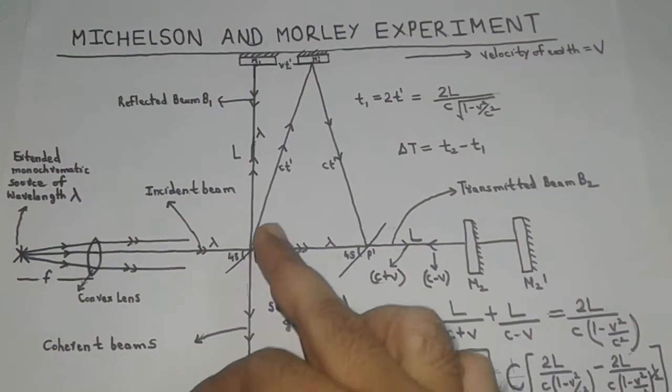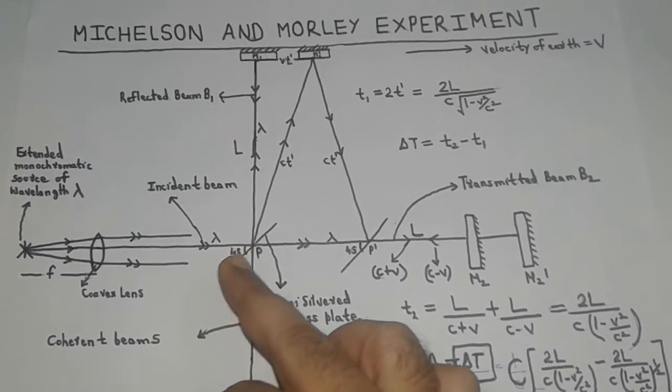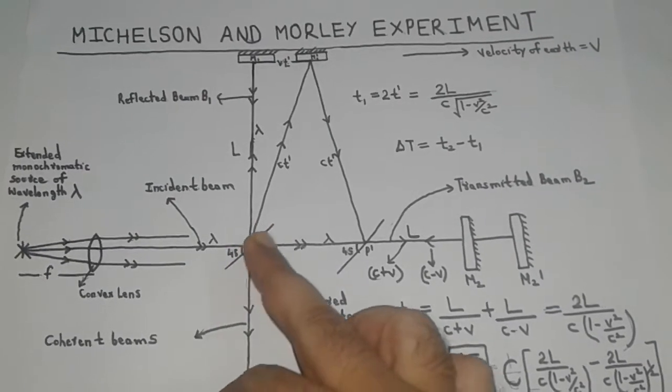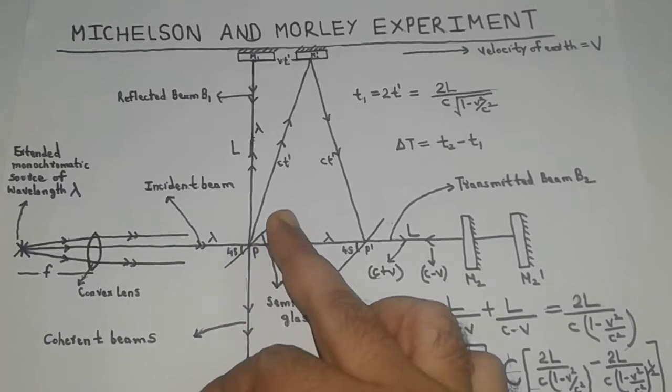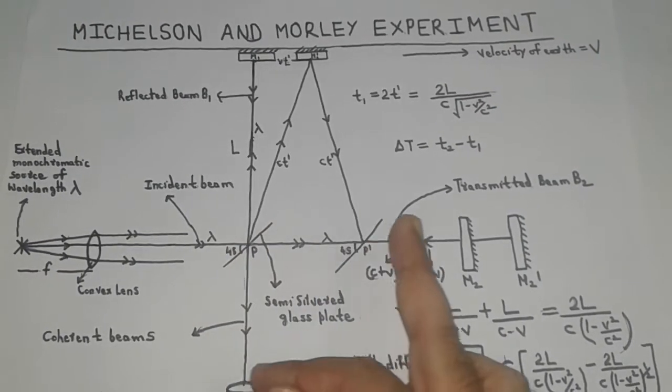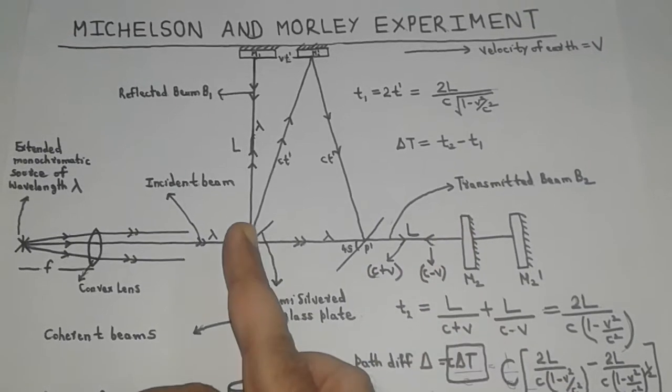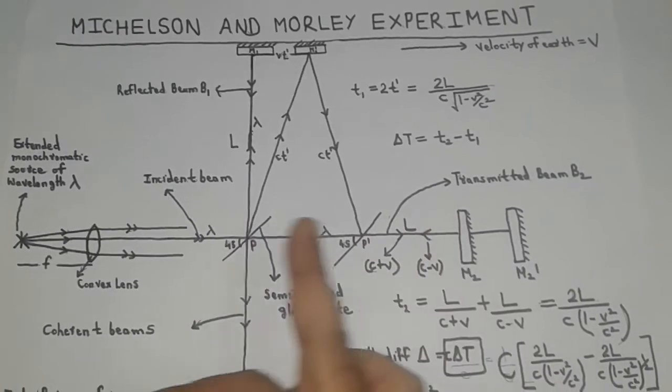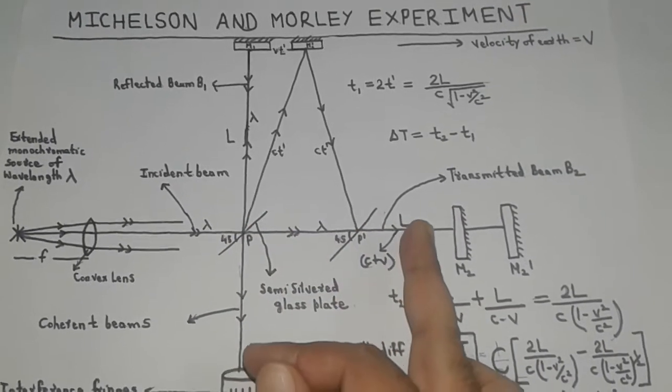This observation confirms that the plate P, to which we have assumed a stationary ether, is in fact not stationary, rather moves with the earth, such that there is no relative motion between the earth and the ether.